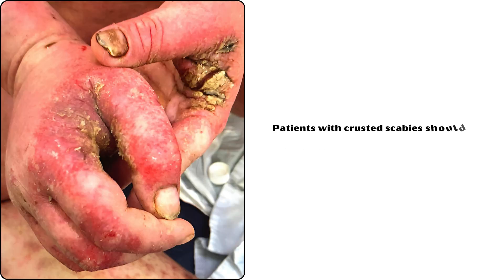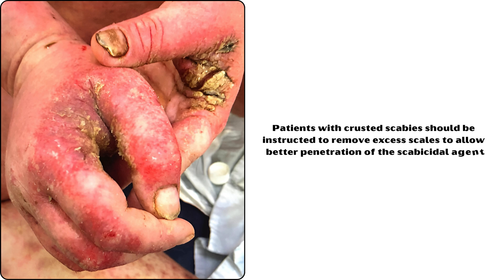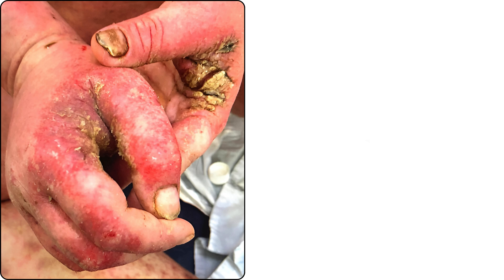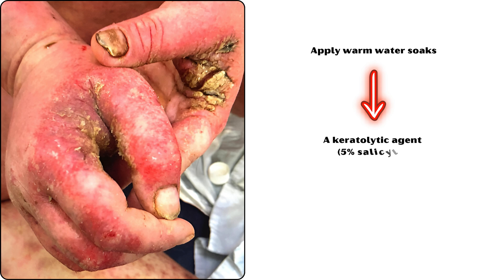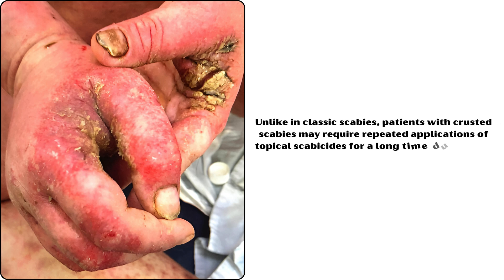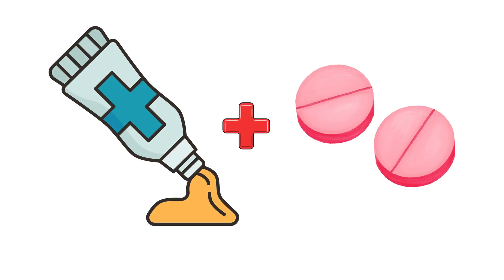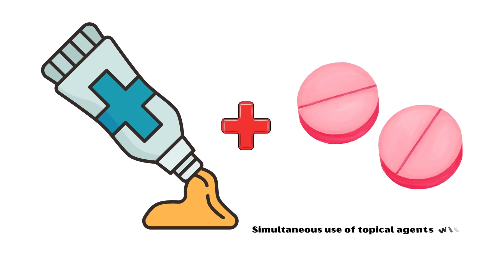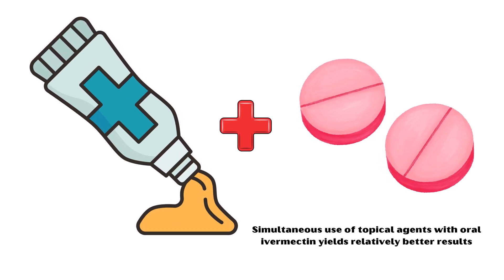Patients with crusted scabies should be instructed to remove excess scales to allow better penetration of the scabicidal agent. This process can be facilitated by applying warm water soaks, followed by application of a keratolytic agent, such as 5% salicylic acid. Unlike in classic scabies, patients with crusted scabies may require repeated applications of topical scabicides for a long time due to heavy mite burden. In addition, simultaneous use of topical agents with oral ivermectin yields relatively better results.